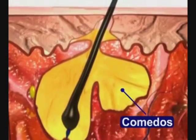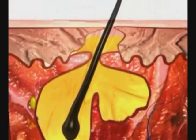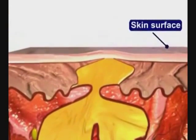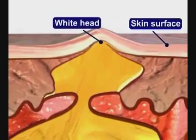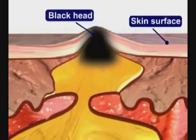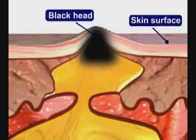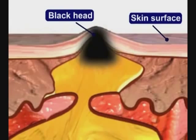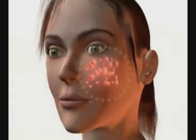There are two types of comedo: whiteheads and blackheads. When the sebum and bacteria stay below the skin surface, a whitehead is formed. A blackhead occurs when the trapped sebum and bacteria partially open to the surface and turn black due to melanin, the skin's pigment.